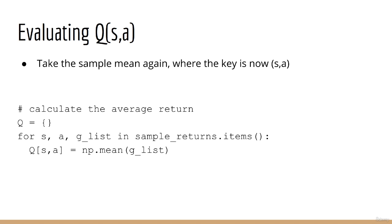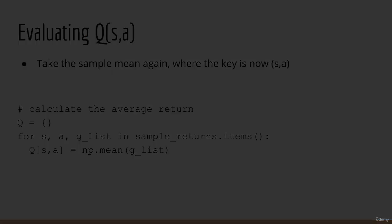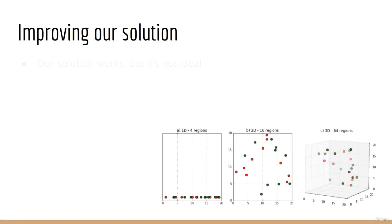As you can see, this is pretty similar to calculating V of S, except when we store the sample returns, we index the dictionary by both state and action. In the second part, Q is again a dictionary, but now the key is a state action tuple. Other than that, the process is exactly the same. We still calculate the sample mean of each list of returns for a given key.